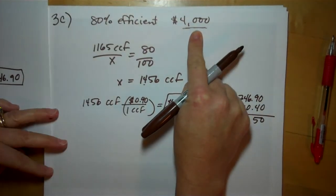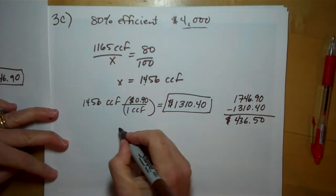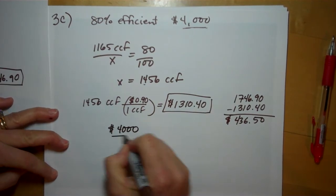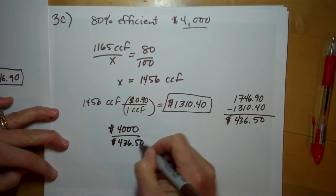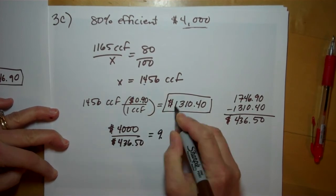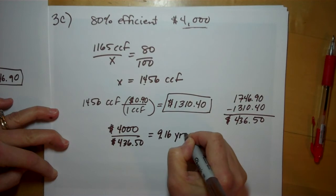But we had to shell out $4,000 for the furnace in the first place. So if we had to pay that for the furnace, how many years is it going to take us to earn this money back? In fact, doing this division comes out to a little over 9 years.